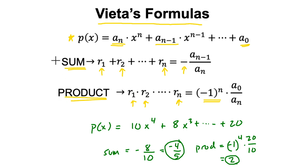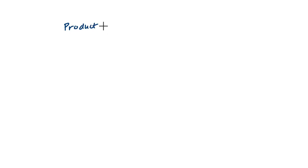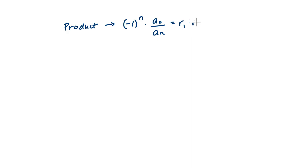Now, how can we prove this? Well, there are lots of ways to prove it. I'm going to show you an informal proof of how this works. Let's start with the product first — this is a little bit easier to sort out. What we're trying to prove is that negative one to the nth power times the constant term divided by the leading coefficient is equal to the product of the roots: root one times root two times root three, all the way up to the nth root.